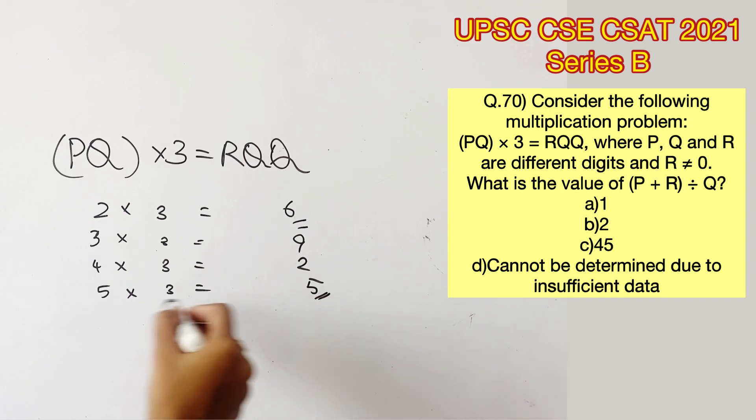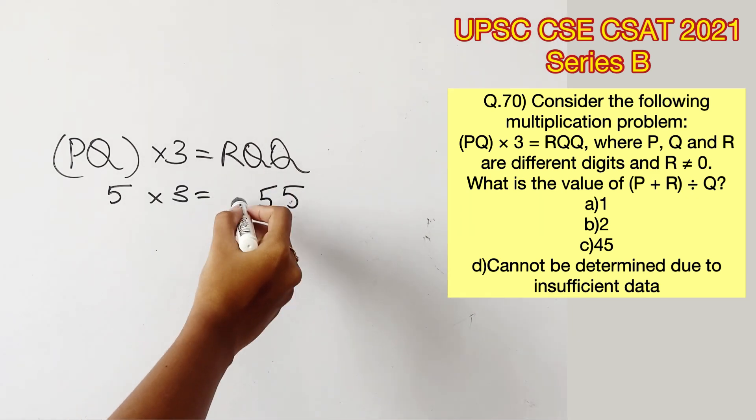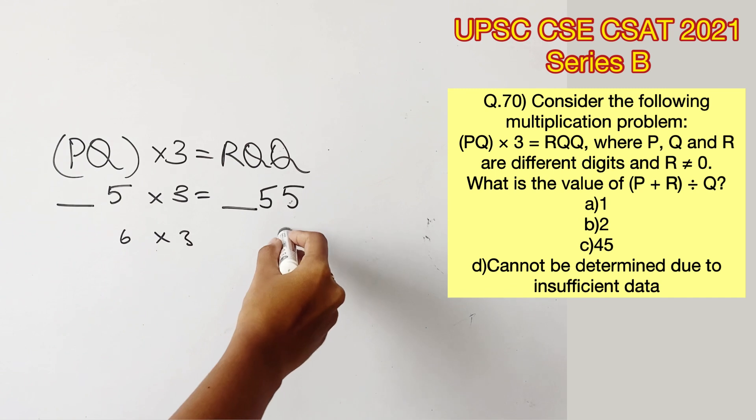5 into 3 will give us 15, which will again give us 5 in the units place. This is a possibility that we should note down. Now we have replaced all the Qs with 5. Let's check for the other digits as well.